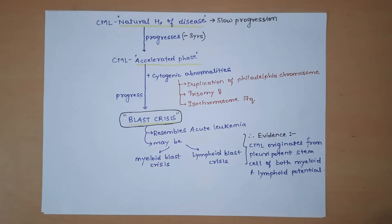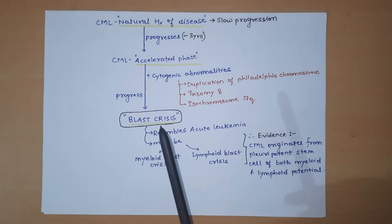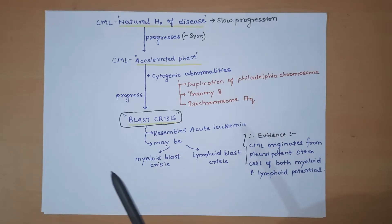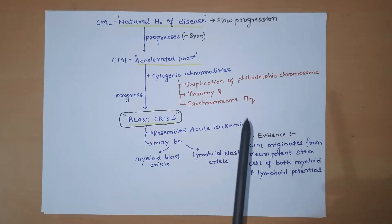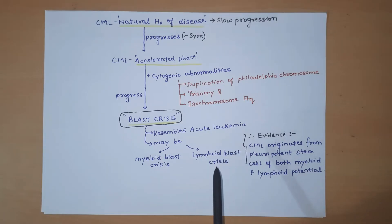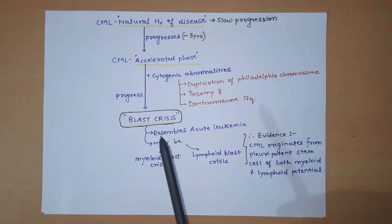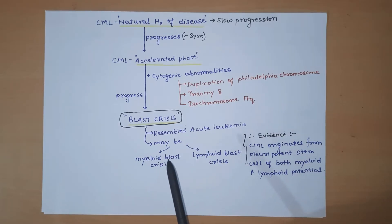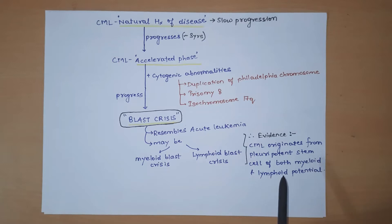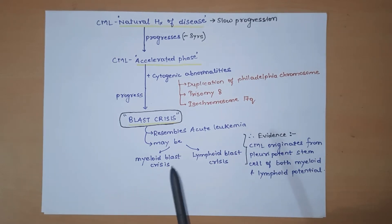In blast crisis, the blood and bone marrow resemble acute leukemia because the blast count is more than 20 percent. It can be myeloid blast crisis or lymphoid blast crisis. Since CML can progress to either myeloid or lymphoid blast crisis, this is evidence that CML originates from pluripotent cells with both myeloid and lymphoid potential.